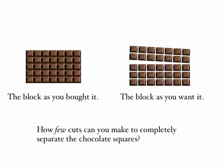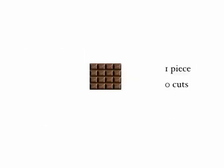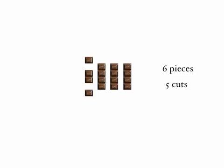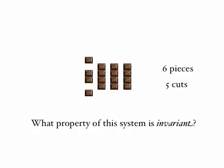Let's look at the chocolate cutting problem again. On the left is the block of chocolate as we start, and the aim is to find how few cuts we can make to cut it into individual squares. On the right I'll write the total number of pieces and cuts made: one piece, no cuts; one cut, two pieces; two cuts, three pieces; three cuts, four pieces; four cuts, five pieces. Look for the invariant — have you spotted it? Five cuts, six pieces. Six cuts, seven pieces. The number of pieces is always one plus the number of cuts — that's invariant through all the cuts.